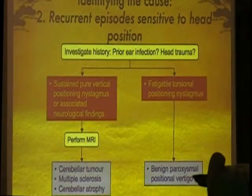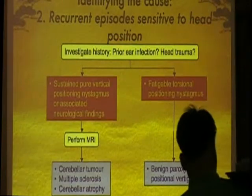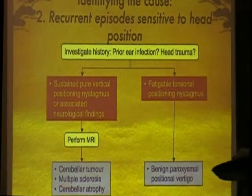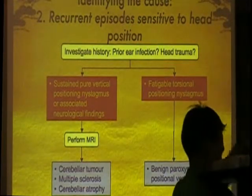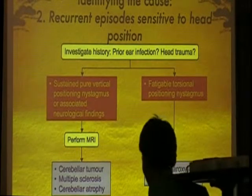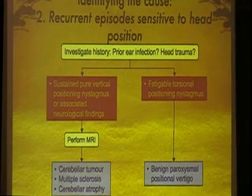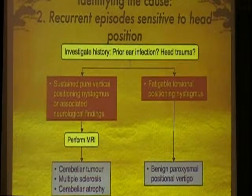How about if you have recurrent episodes sensitive to head position? When you have recurrent episodes sensitive to head position, you will most likely diagnose benign paroxysmal positional vertigo, especially if there are no infections or other causes. Even just a history of dizziness with head movement most likely means the patient has BPPV. The only time you perform an MRI is when there is a problem with nystagmus — when it's not only horizontal but both horizontal and vertical — and when you need to rule out tumors such as acoustic neuroma.